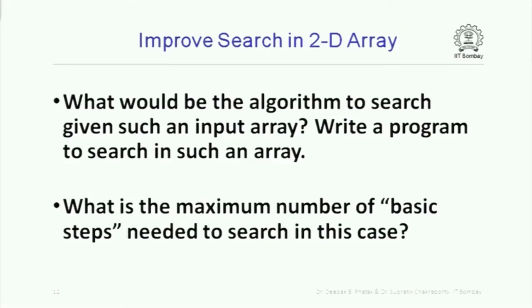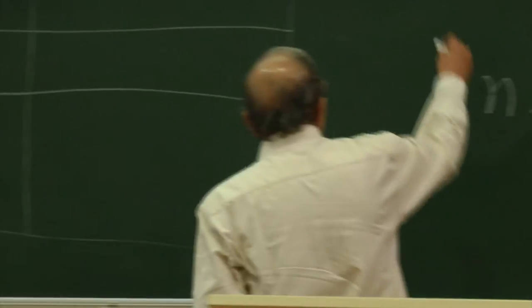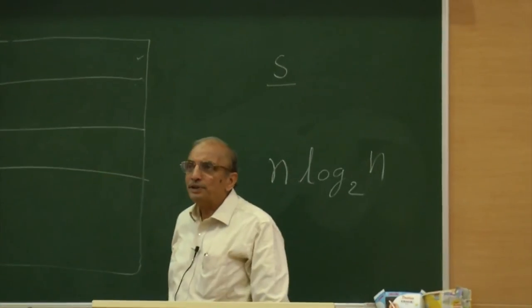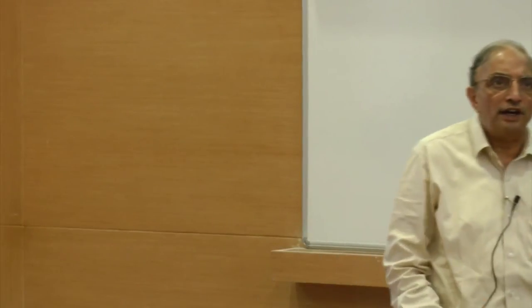Given an input two-dimensional array of n² elements where each row is sorted in ascending order, and given an element S, search element S in the two-dimensional array in the most effective fashion using the fact that each row is sorted. Write a C++ program to do this.